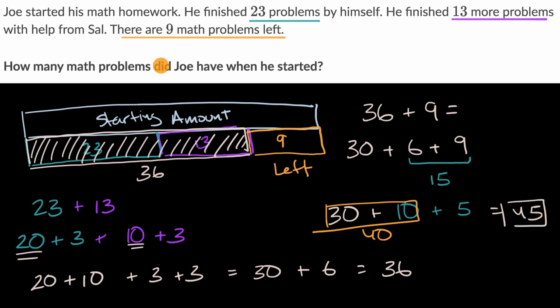So Joe had 45 problems when he started. He did 23 by himself, then he did 13, and he would have 9 left. If you start with 45 and subtract 23 and then subtract 13, you actually would indeed have 9 left.